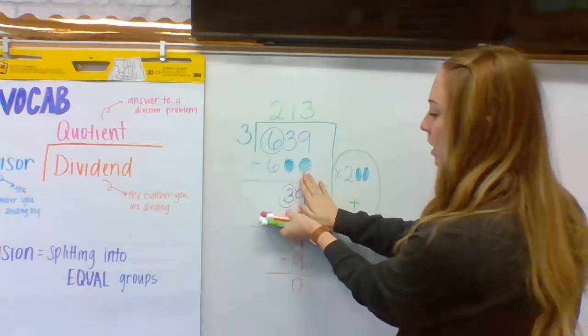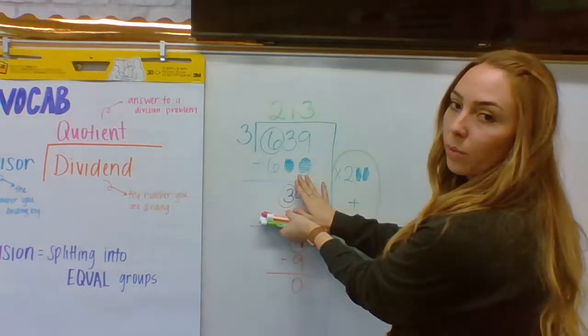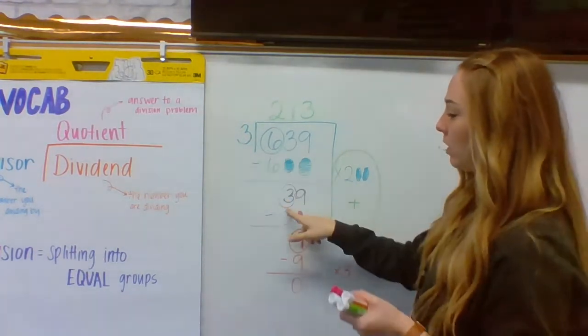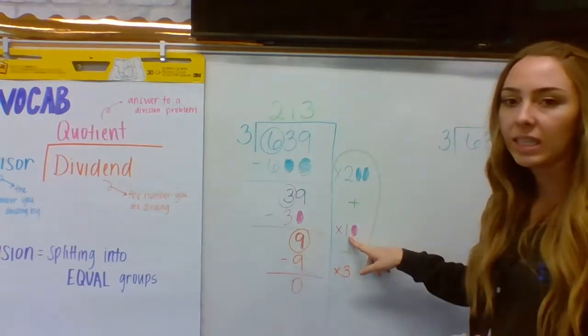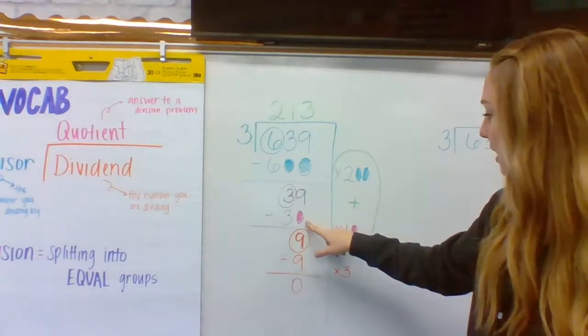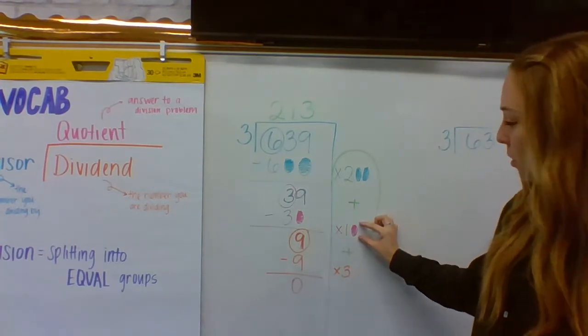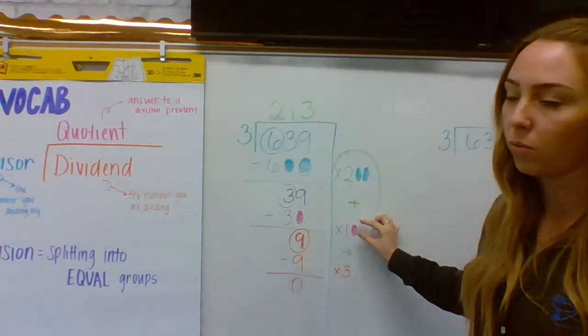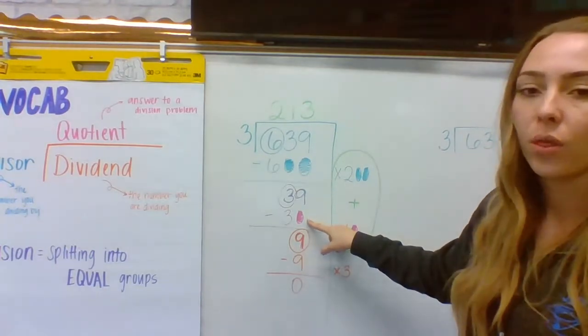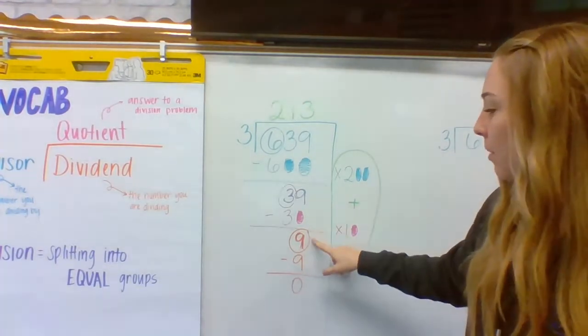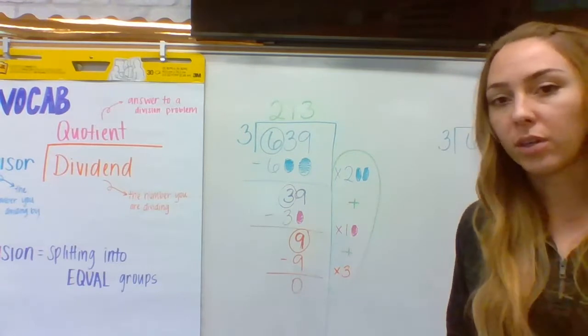And then I start all over again. I look at just the number in the front, which is a three. I know that three goes into three one time. That's easy. And why not add a zero to get rid of more? That way I'm not getting rid of one group of three. I'm getting rid of 10 groups of three. I can subtract 30.